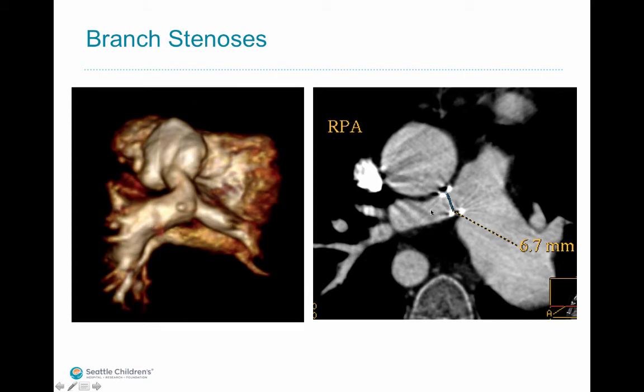On the right-hand image you see hypoplasia of the right branch pulmonary artery with a metallic stent placed at the origin. In this case, the left branch pulmonary artery is spatulous in appearance.